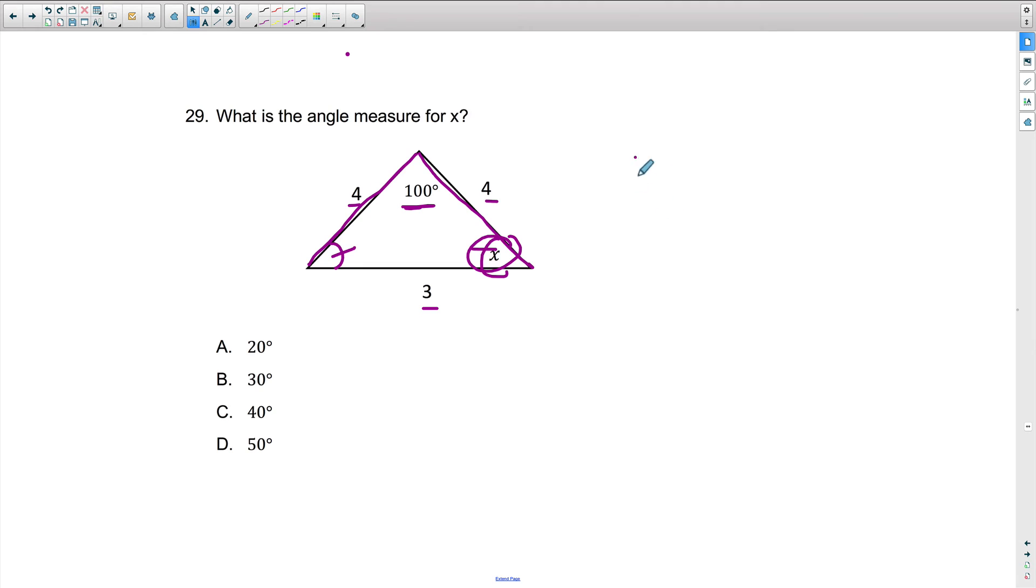Well, a triangle is 180 degrees. That means that every single angle, all three angles of a triangle, no matter what kind of triangle it is, will always be 180 degrees. Now, I already know the degrees of one angle, which is 100. So what I'm going to do is I'm going to subtract 100. And 180 minus 100 is 80.